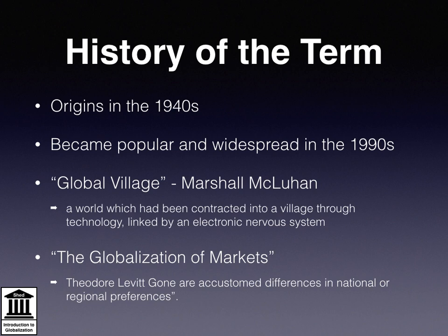The first term to consider is that of the global village, coined by Marshall McLuhan, who used it to describe a world which has been contracted into a village through technology, linked by an electronic nervous system. The second use appeared in an article by Theodore Levitt in 1983 entitled 'The Globalisation of Markets', referring to the spread of corporations around the world, wherein he declared, 'Gone are accustomed differences in national or regional preferences.' It was this article which really brought the term to popular notice.